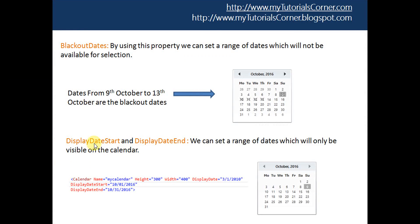The next property is DisplayDateStart and DisplayDateEnd. If you notice, this calendar is displaying the dates of the previous month and the next month as well — the next month dates are from 1st November to 6th November, and it is also displaying the previous month dates from 26th September to 30th September. But in certain cases we don't want to display the previous or next month dates, so to do that we can use the DisplayDateStart and DisplayDateEnd properties.